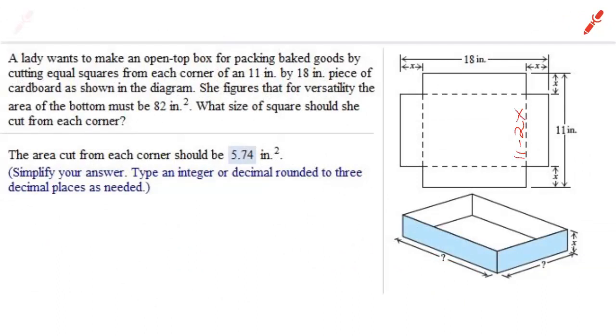A lady wants to make an open top box for packing baked goods by cutting equal squares from each corner of an 11 by 18 piece of cardboard as shown in the diagram. And we're told that the bottom is 82 square inches in area. And we're asked to find what x equals. How wide is each square on a side?